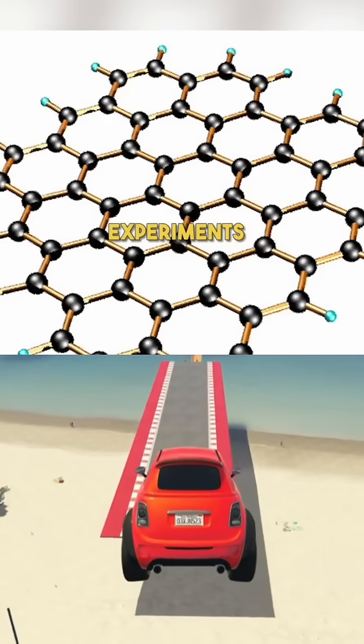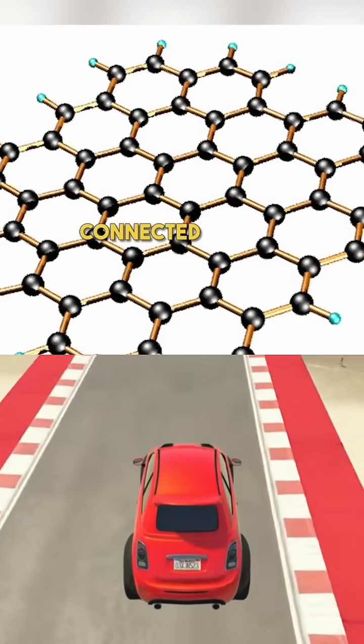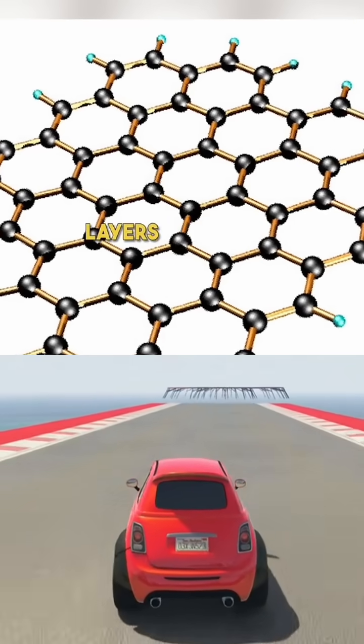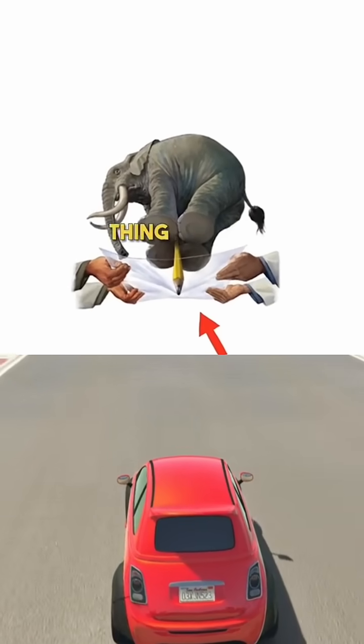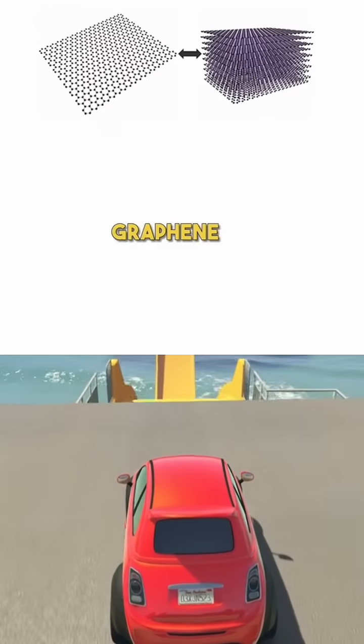Even after many experiments, it was discovered that if about 300 graphene layers are connected together, it can completely block bullets 100%. The amazing thing is that 300 layers of graphene is very, very thin.